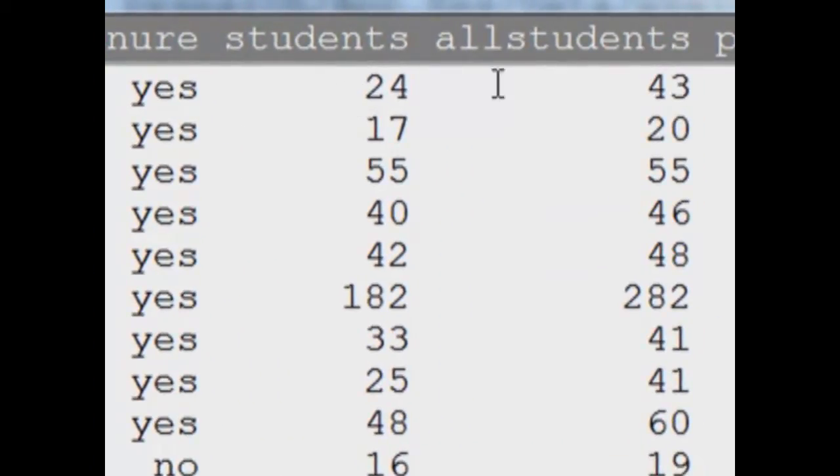The next two variables tell you how many students were there in the course. All students tells you that there were 43 students in the course, and the number of students who responded to the survey are reported here under students.